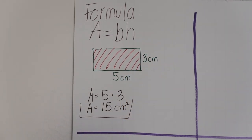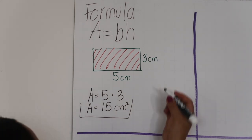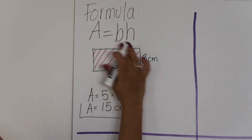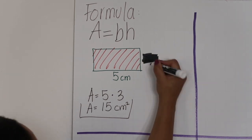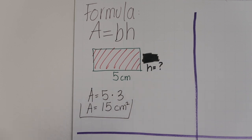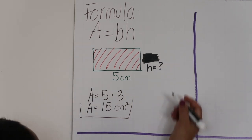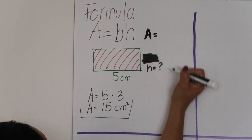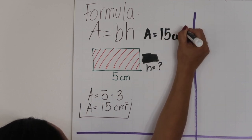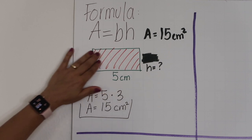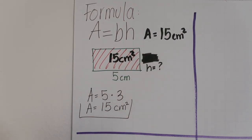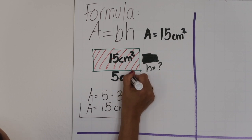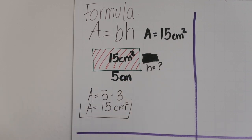Now another example: what if they give you 5 for the base without the height, and they ask you to find the height, and they're also giving you the area equals 15 square centimeters? They're saying it's 15 square centimeters for this area, and they're giving you the base as 5 centimeters, but asking you to find the height.